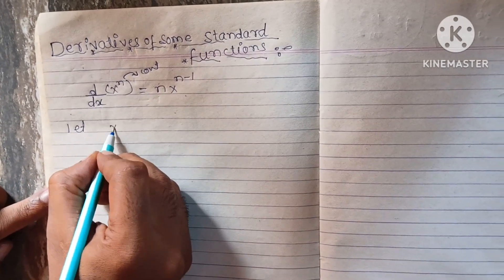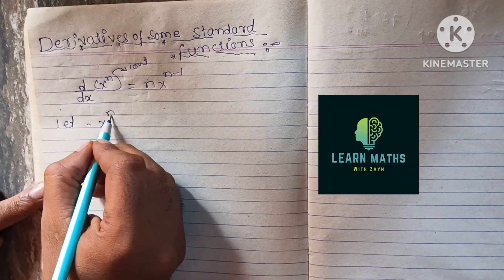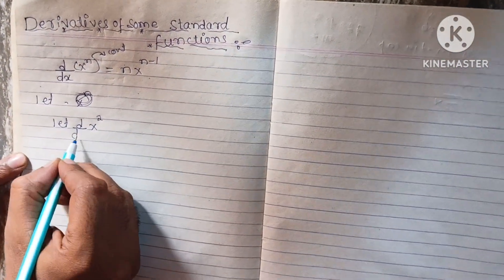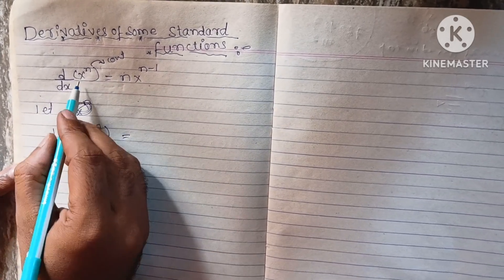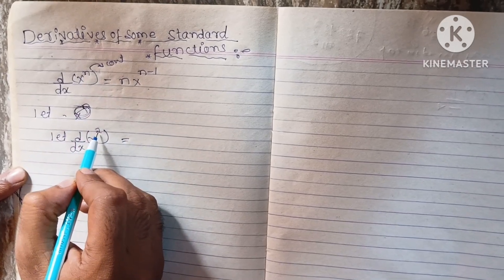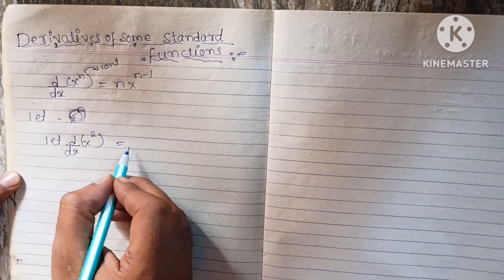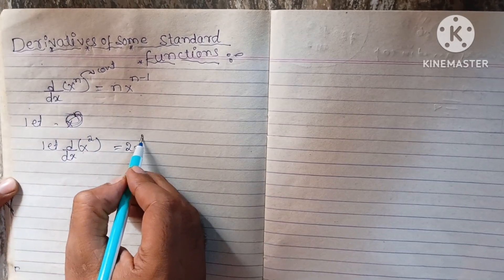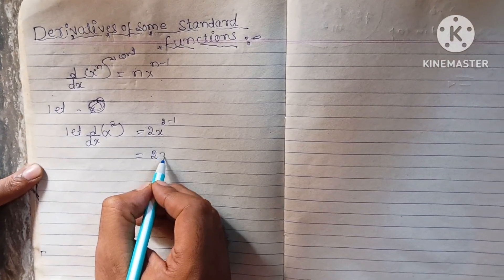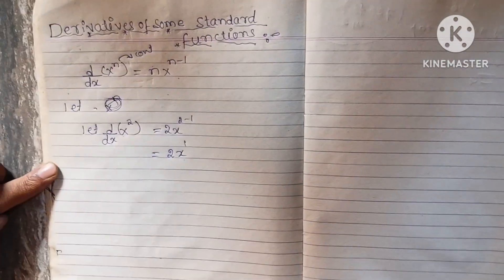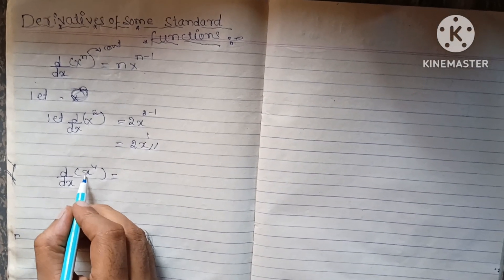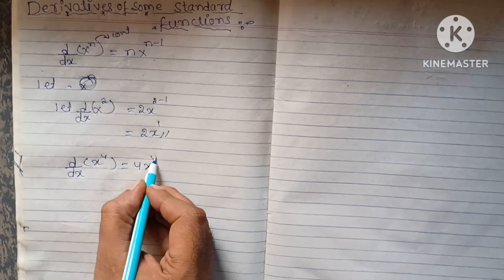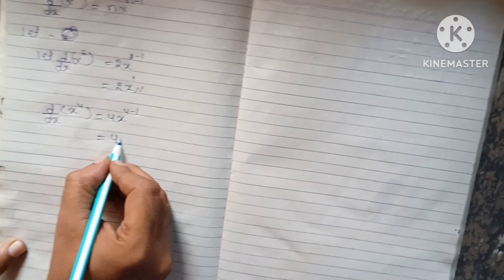Let us see one example. I will take x square. We have to differentiate x square. Here x is x and n is 2. So n means 2 here. I would like to write 2x, keep this x as it is. What is the value of n? 2. So 2 minus 1, which is equal to 2x raised to 1. Now if I take x raised to 4 — same here. In place of n we have 4. So 4x raised to 4 minus 1, which is equal to 4x cube. These are the simple basic questions of differentiation.